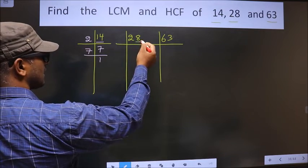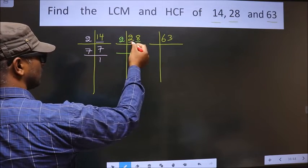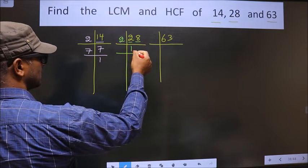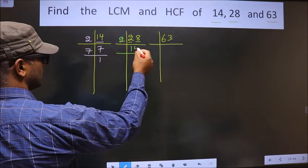Now here the last digit is 8, so we take 2 here. First number is 2. When do we get 2 in the table? 2×1 is 2. Next number is 8. When do we get 8 in 2 table? 2×4 is 8.